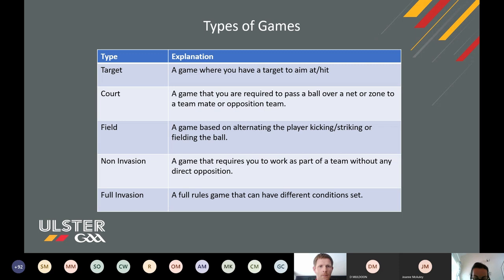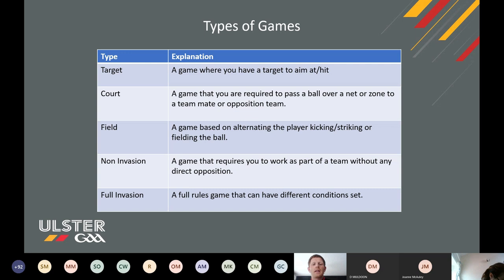Types of games. There are five types of games we're going to explain today. A target game is a game where you have a target to aim at or hit. A court game is a game where you're required to pass a ball over a net or zone to a teammate or opposition. A field game is based on alternating between kicking, striking, or fielding the ball. A non-invasion game requires you to work as part of a team without any direct opposition. And a full-invasion game is a full-rules game with different condition sets.